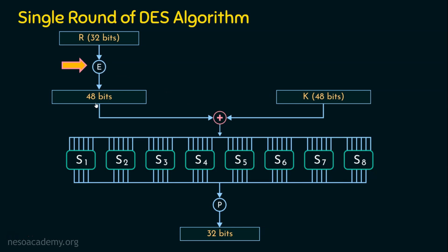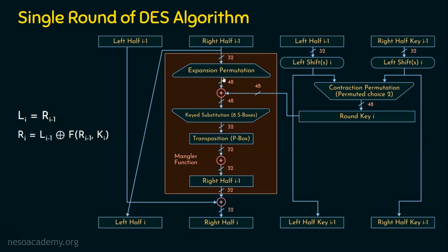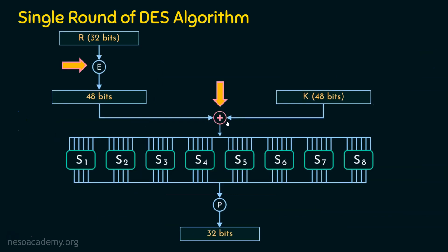Then what happens? A simple XOR operation with the round key. This operation is quite straightforward: the 48-bit output from the expansion table is XORed with the 48-bit round key, and obviously we get 48 bits. The 32-bit input from the right-hand side is expanded to 48, then XORed with the round key to get another 48 bits, which are then given to the S-box.